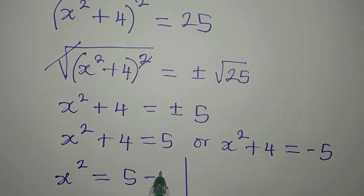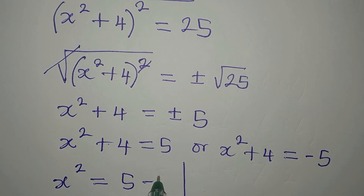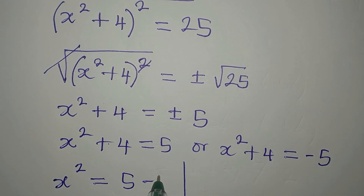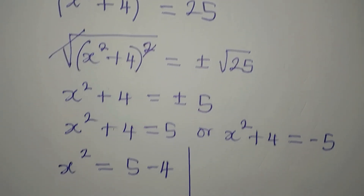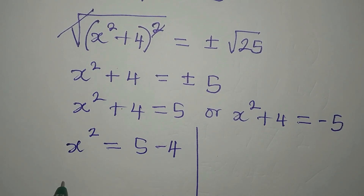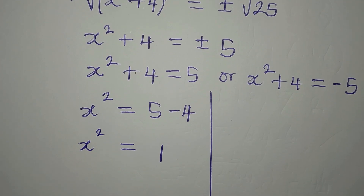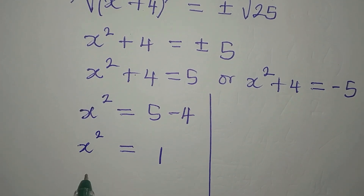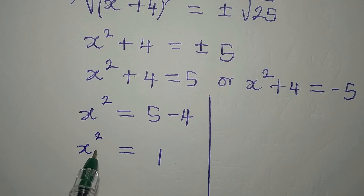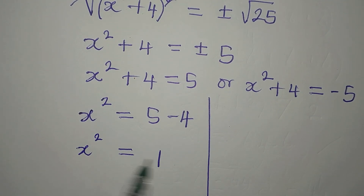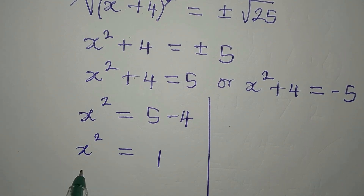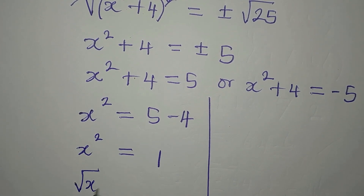Let's deal with the first equation. x² = 5 - 4, so x² = 1. We want to get the value of x, but this is still a quadratic equation because of the square, so to remove it we'll take the square root again.